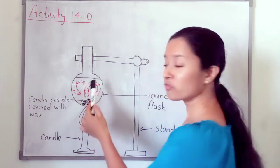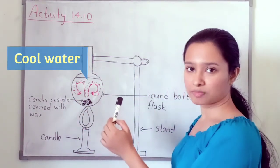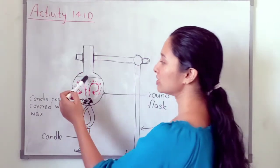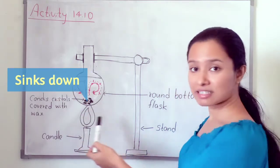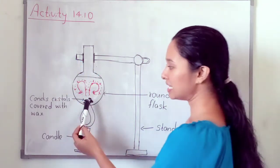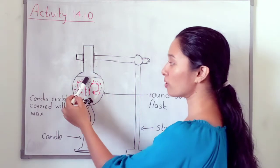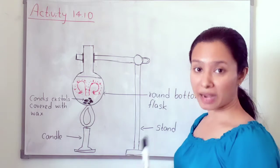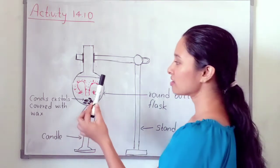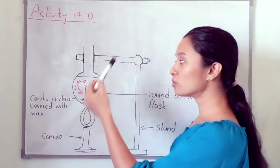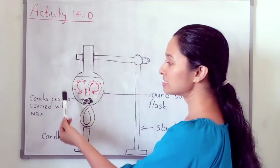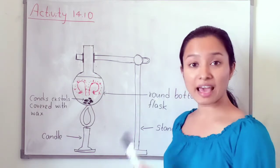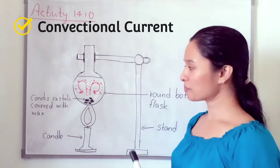At the top of the flask there is cool water. The density of cool water is high, so this cool water sinks down. Heated water rises up and cool water sinks down — this is what happens in this practical. The heated water rises up and cool water sinks down as currents. We call these currents convectional currents.